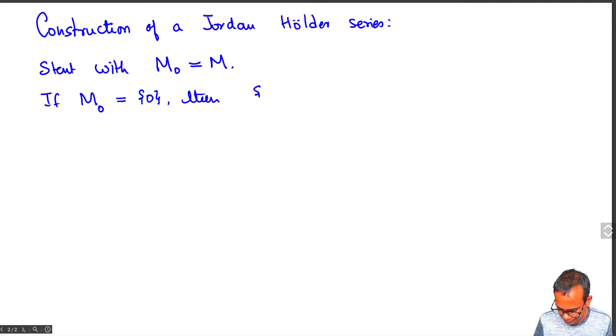At each stage, if M0 is trivial, there are no quotients here. Else, M0 also satisfies the ascending chain condition, so M0 contains M1, a maximal proper subgroup.